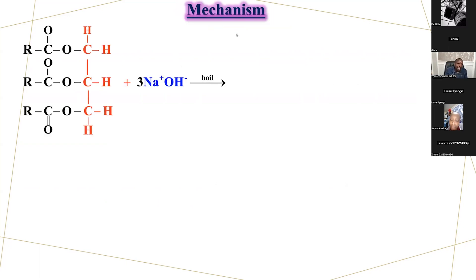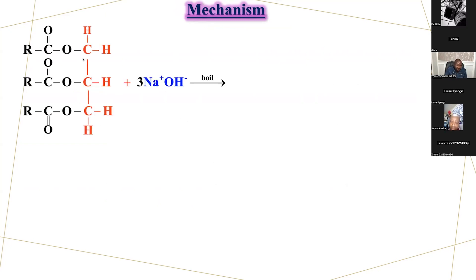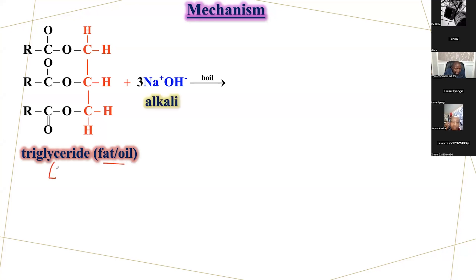Now let's look at the general formula — how to prepare soap. When students are given this kind of formula they start wondering. The fat or oil structure shown is simply called an ester. Fat and oils are esters. This component is a sodium hydroxide molecule. So when you're asked what this is, this is an ester.